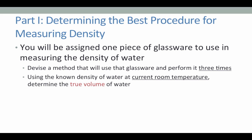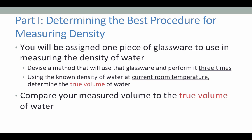Next, you will use the mass of the water and the known density to calculate the true volume of that water at the current room temperature. By comparing your measured volume to this true volume, you will have an idea of the accuracy and precision of the glassware you chose.